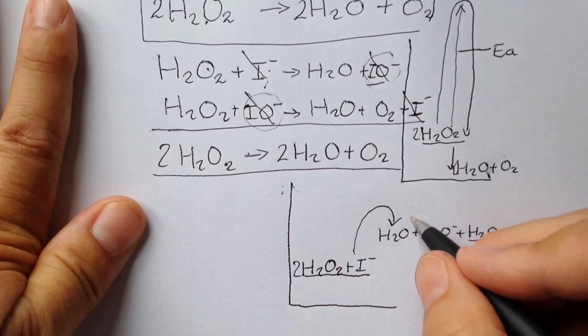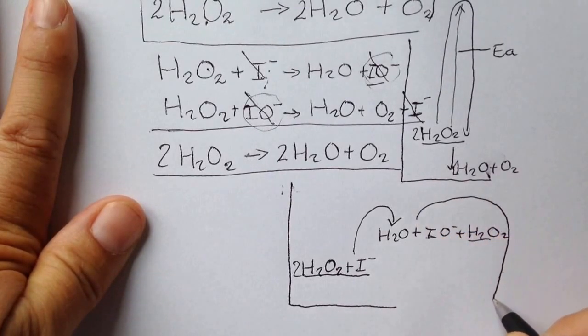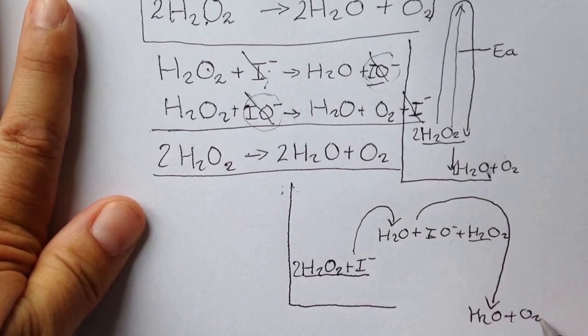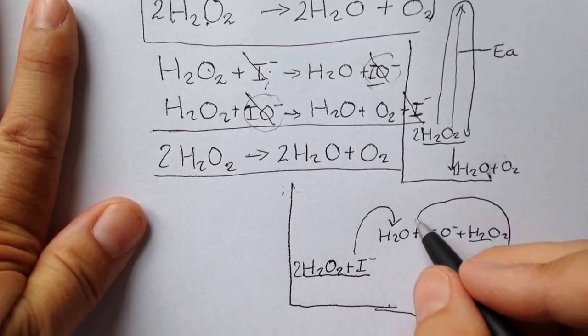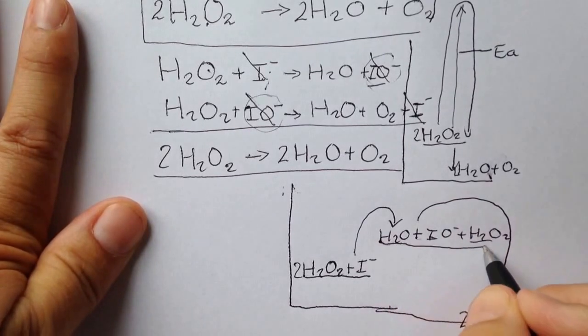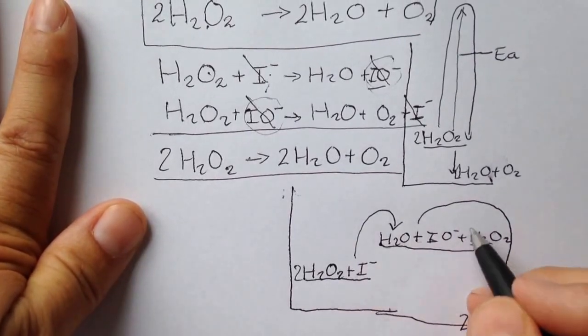This then reacts with the IO minus to produce our H2O plus oxygen and regenerates our iodide ions. So you can see that the activation enthalpy has been lowered and it takes place in two steps.